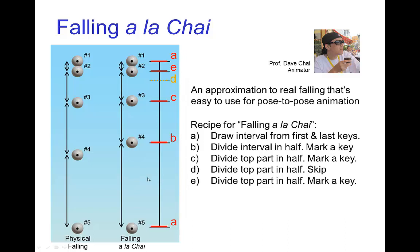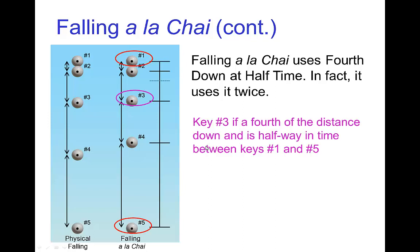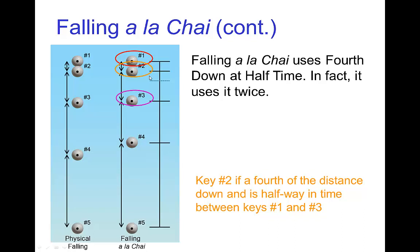Falling a la Chai is not exact. You can see the positions and spacings that falling a la Chai gives you compared to the actual correct spacings from the odd rule — key number four is a little bit high, but hardly noticeable. Falling a la Chai is actually based on using fourth down at half time twice: key number three, which is halfway between numbers one and five in time, is a fourth of the way down. Key number two, which is halfway in time between one and three, is also a fourth of the way down. Number four is just an estimate — a little bit off, but close enough.